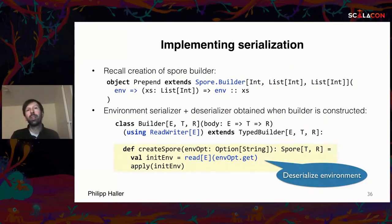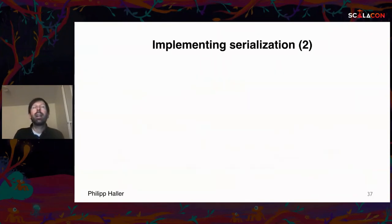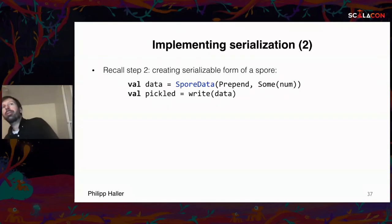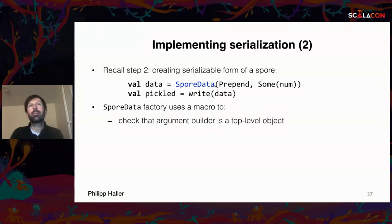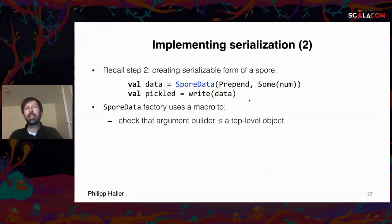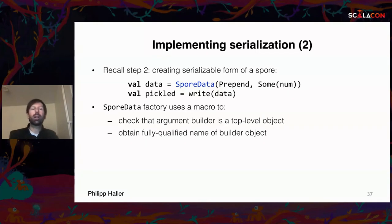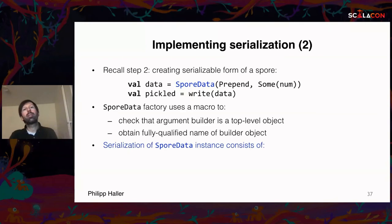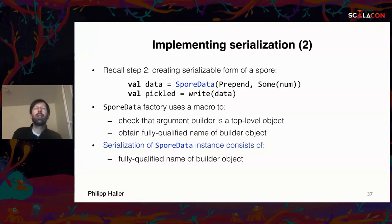As long as the constructor has been invoked, we already have the serializer and deserializer, so all methods can make use of them. When creating a `SporeData`, the apply method checks that the argument is a top-level object accessible from the root, and statically looks up the fully qualified name used during serialization. So `SporeData` has a clear serialization: the fully qualified name of the builder and the environment.